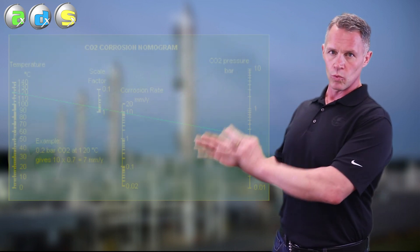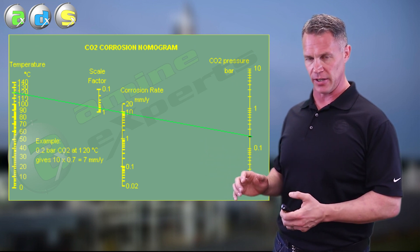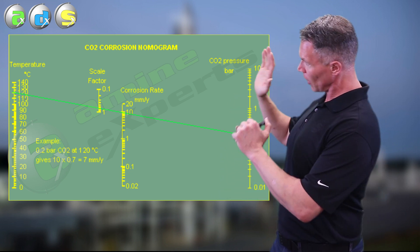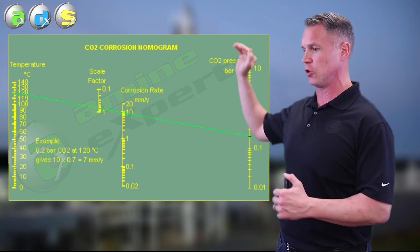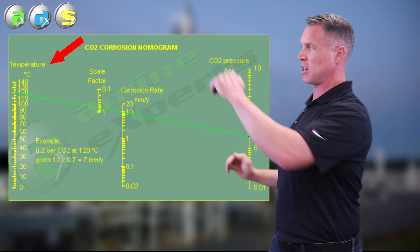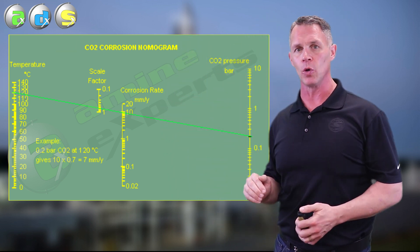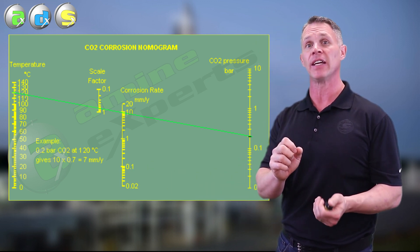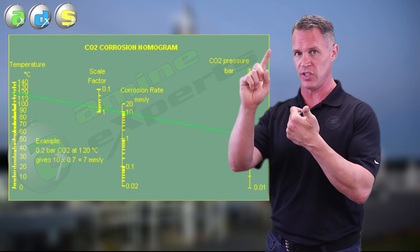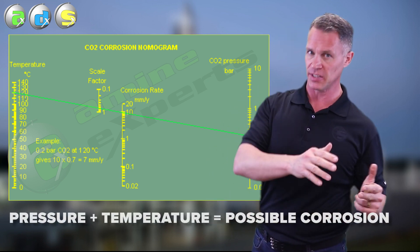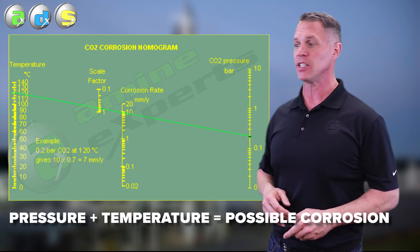Let's go through the amine plant piece by piece. We'll start with this nomograph that my colleague Mike Sheehan provided. On one side of the nomograph we have CO2 pressure or partial pressure, and on the other side we have temperature. Depending on the CO2 pressure, it tells us at what temperature we can start to expect corrosion. Simply put, we want to avoid a situation where we have CO2 under high pressure combined with high temperature — pressure plus temperature equals possible corrosion in a CO2 system.